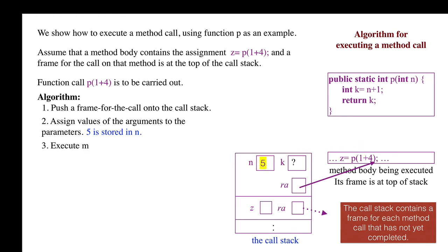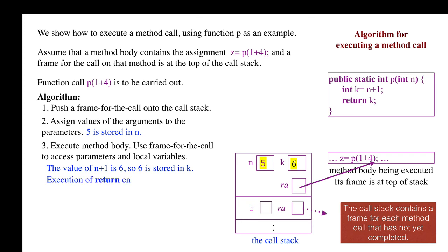Step 3: Execute the method body using the frame for the call to access parameters and local variables. We execute the assignment k becomes n plus 1. The value of the expression is 6, so we store 6 in k. Then, execution of the return statement ends execution of the body with the value 6 having to be returned.